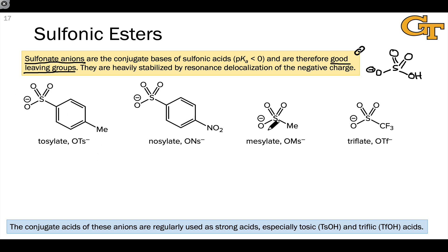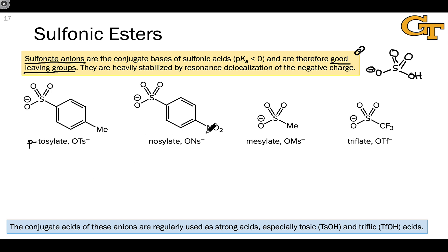Just to survey the most common sulfonate anions: you'll see tosylate (OTs⁻) with the para-toluene group; you'll see para-tosylate occasionally; and nosylate is the para-nitrosulfonate anion.